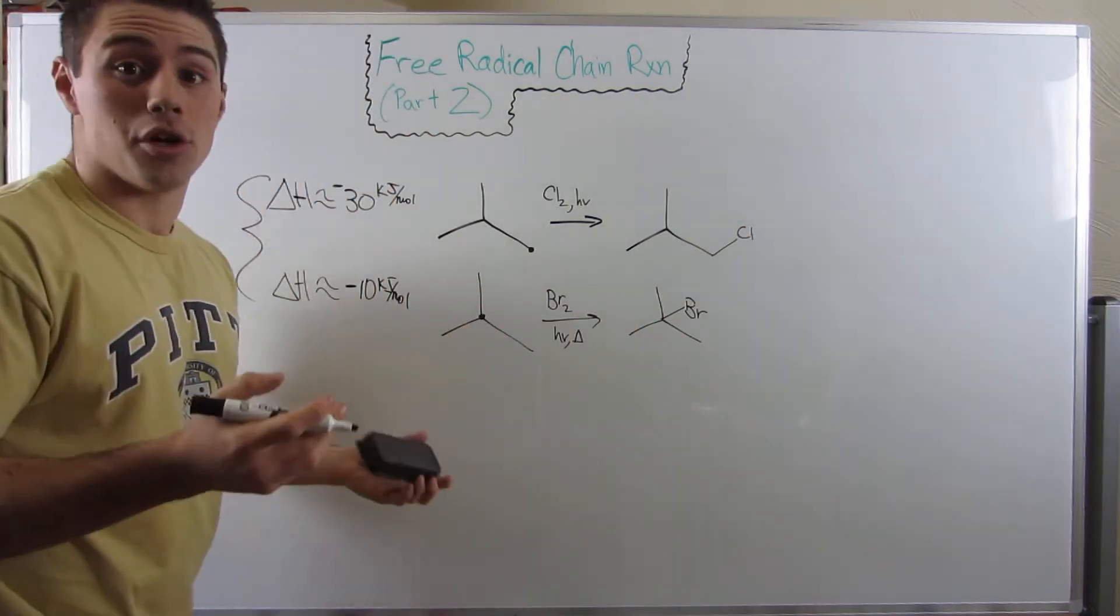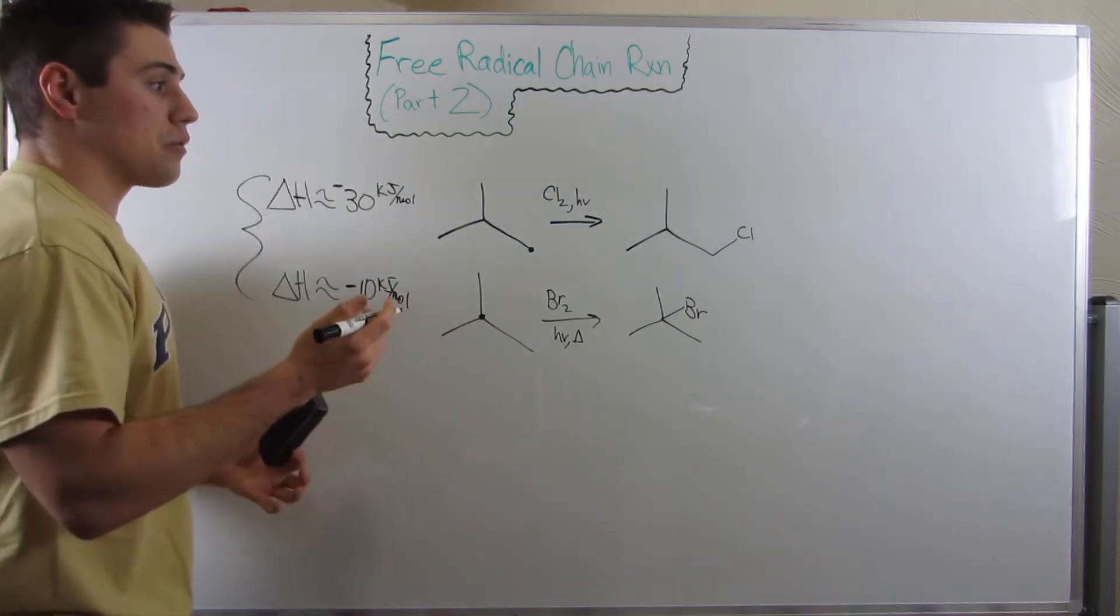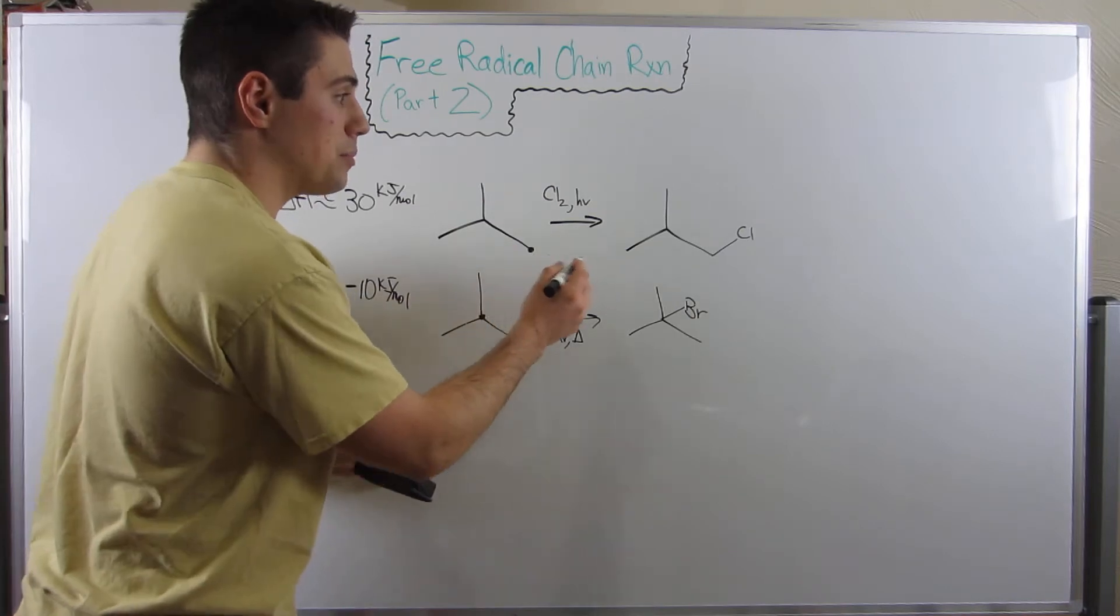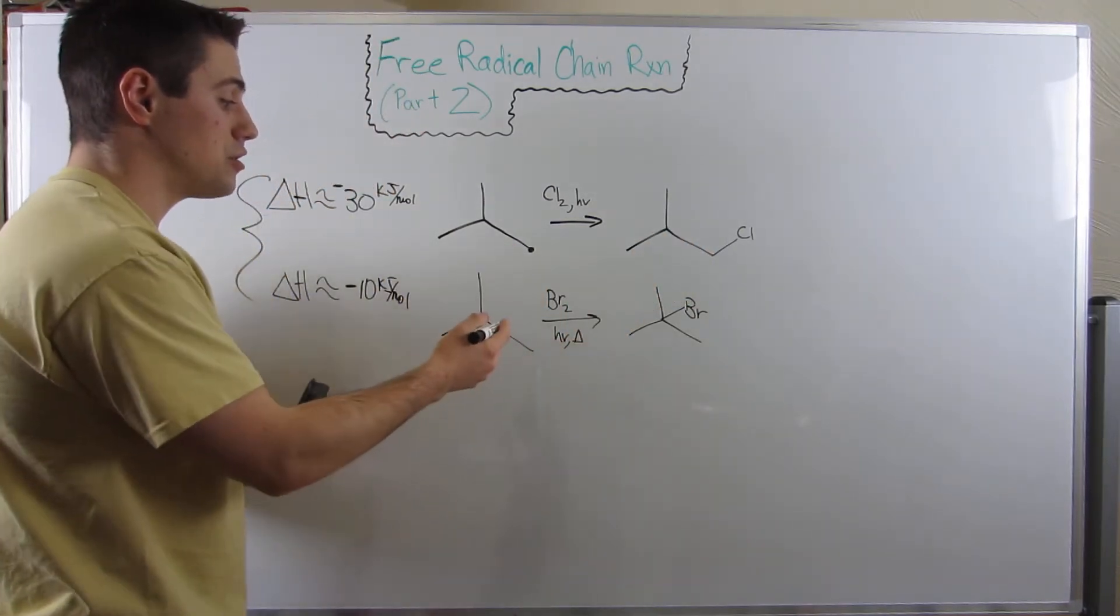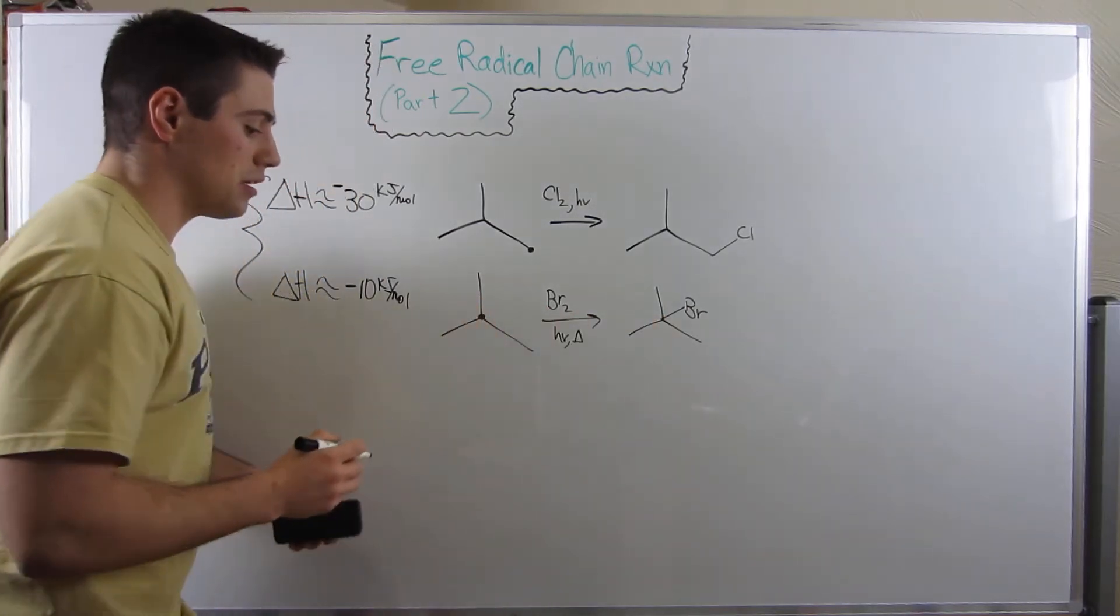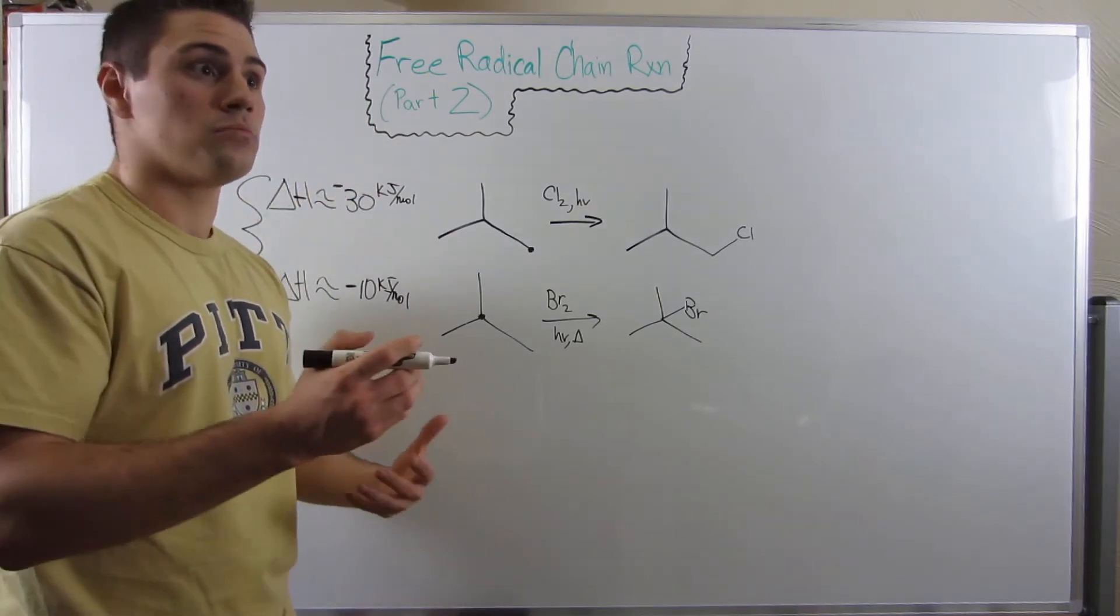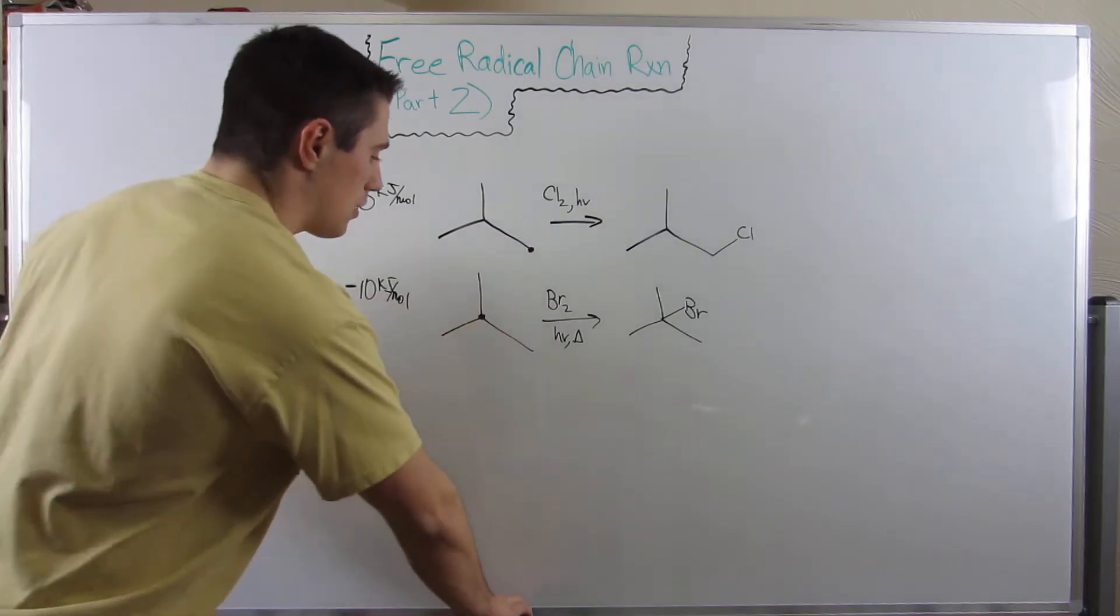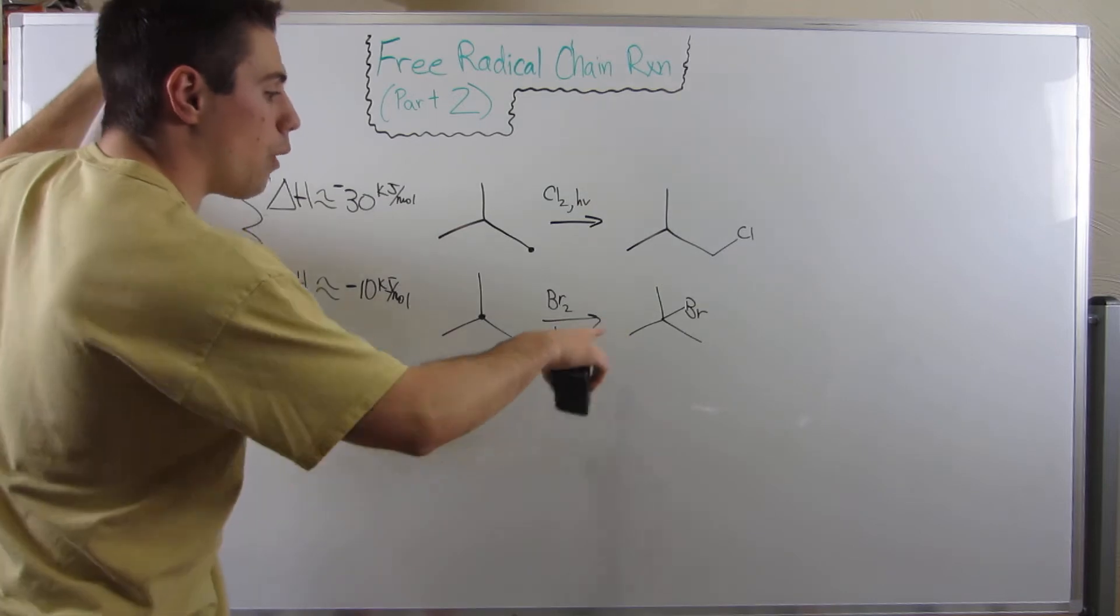And the term here is regiochemistry. The regiochemistry is different. All that means is where things end up. So this chlorine ends up on the primary position, but over here, there's a different regiochemical outcome. The bromine ends up on the tertiary carbon here. If you want to add a big word to your repertoire, regiochemical or regiochemistry just means where things go on a molecule.